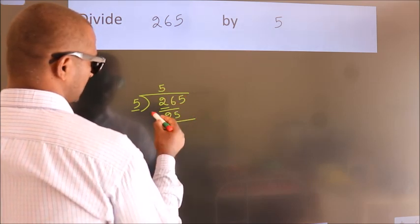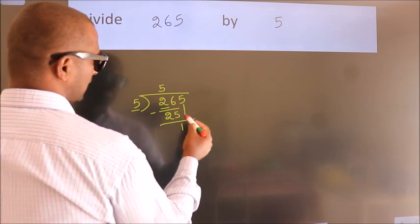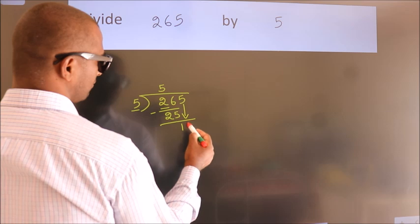Now, we should subtract. We get 1. After this, bring down the beside number. So, 5 down.